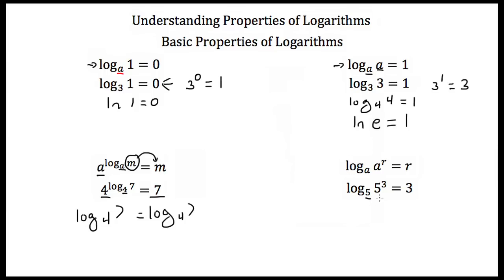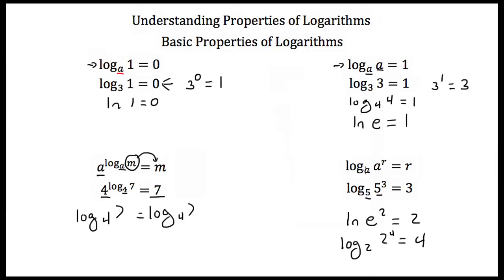Now if we ever have the log with the same number and the same base, but to some power, then our answer is just that power. So if we have the log base 5 of 5 cubed, then the answer is just 3. If we had the natural log of e squared, that's just equal to 2. The log base 2 of 2 to the 4th power is just equal to 4. So if your base and what's inside the log is the same, you can just take your exponent as your answer.